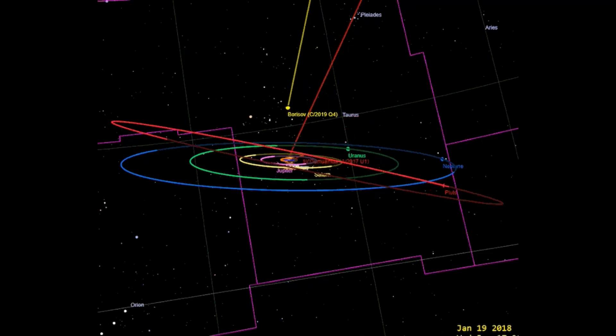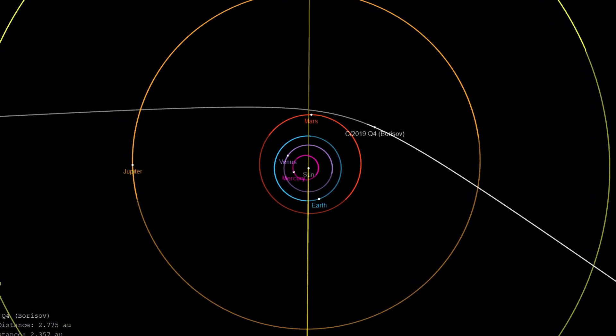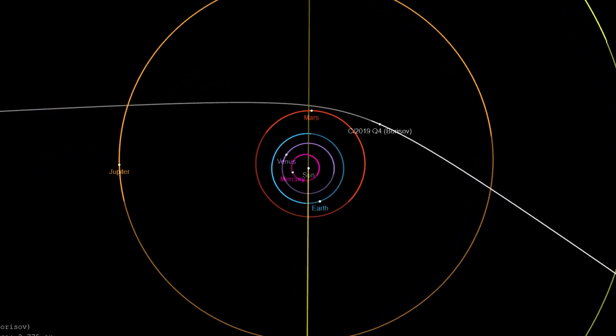Borisov reached perihelion on December 8, 2019, at a distance of around 2 AU from the Sun, and its closest approach to Earth occurred on December 28, 2019, at a distance of about 1.8 AU.